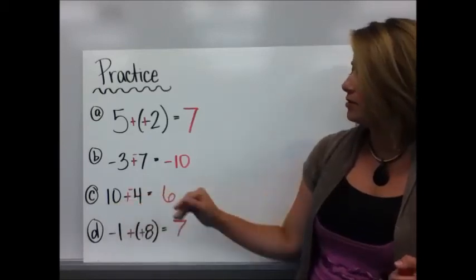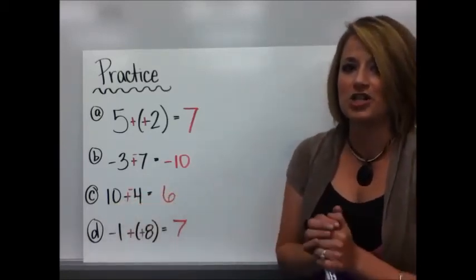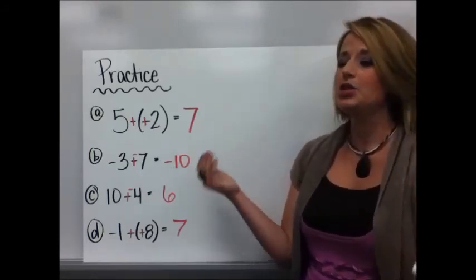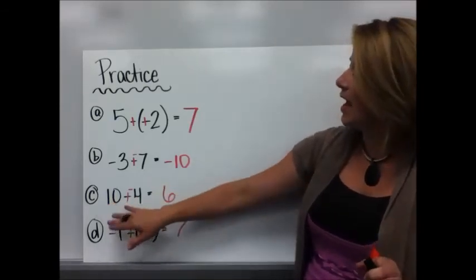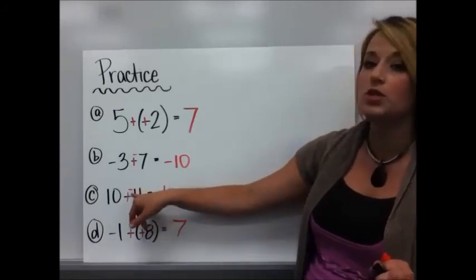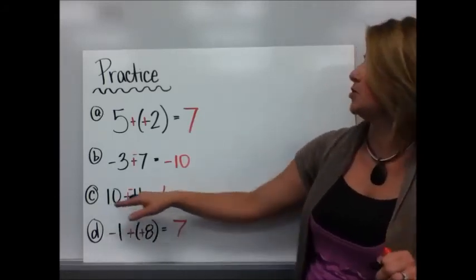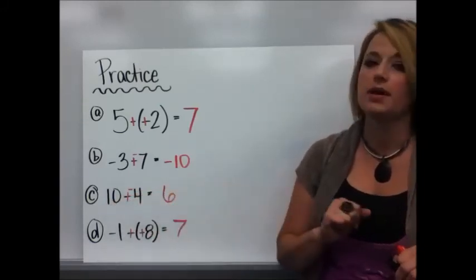10 minus 4. Now wait, you might have remembered, hey, this is just like subtraction I did in second grade, and you said 10 minus 4, that's 6. But since you're in that mode of the keep, change, change, it still works. I keep 10, I change subtraction to addition, and I change 4 to a negative 4, its opposite. Different signs. The difference between 10 and 4 is 6. More positives than negatives, so it's a positive 6.